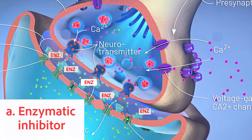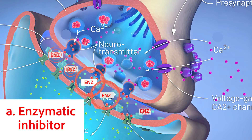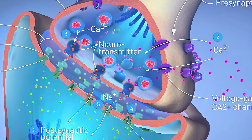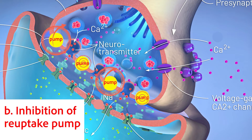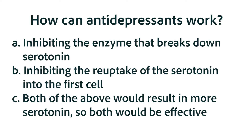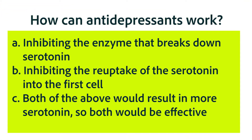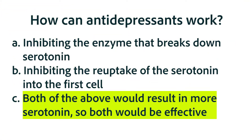Option A: administer an agent that inhibits the enzyme in the synaptic cleft that breaks down serotonin and/or noradrenaline. Option B: administer an agent that decreases the reuptake of serotonin and/or noradrenaline in the synaptic cleft. Or option C: both of the above would potentially give the desired effect. The correct answer is C — both would potentially give the desired effect.